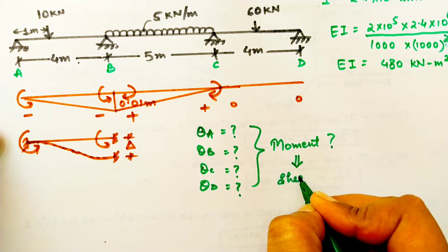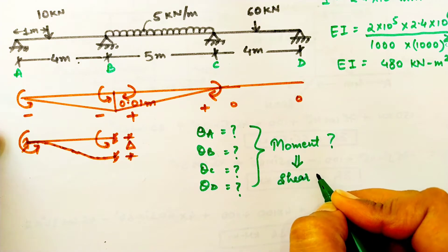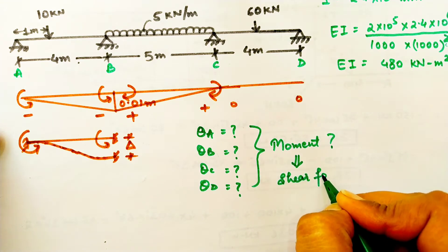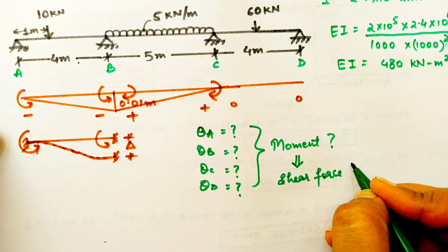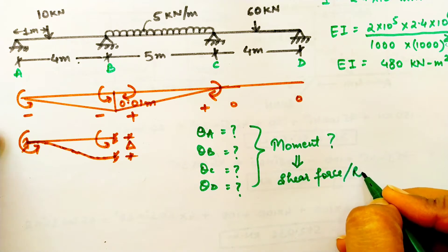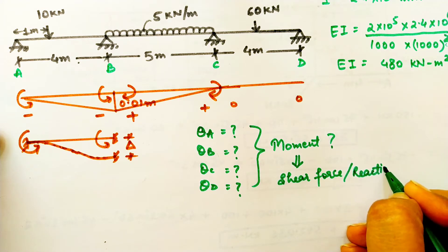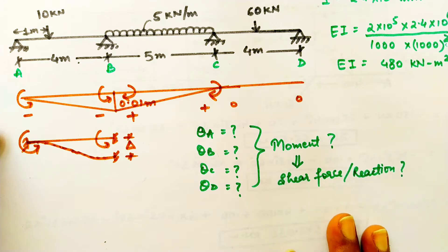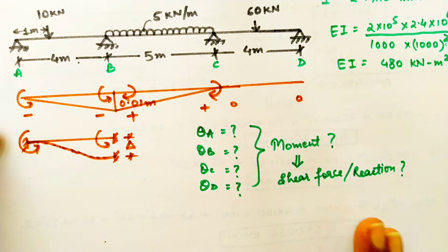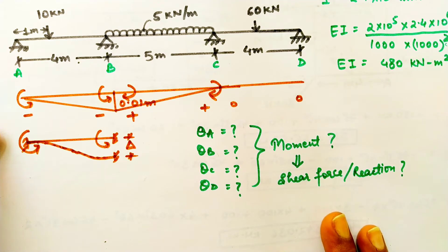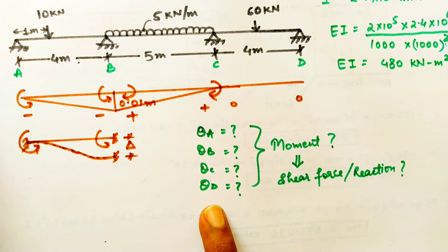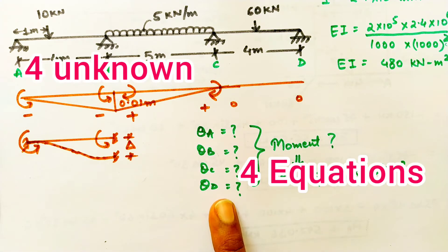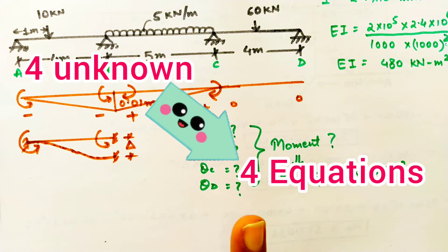By finding out the slopes we will again find out the moments, and with the moments we will find out the shear force or reactions. Analysis of the beam means finding out this complete set. To find out four unknowns we will be having four equations.